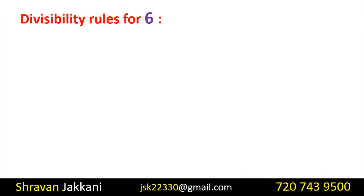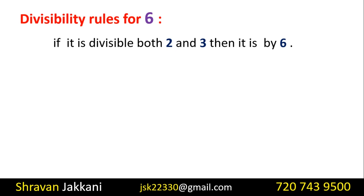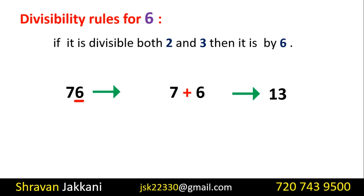Divisibility rule of 6: If a number is divisible by both 2 and 3, then it is divisible by 6. So if a number satisfies both the rule of 2 and the rule of 3, it is divisible by 6. Let's take the number 76: the ones place is 6, which is an even number, satisfying rule of 2. If we add the digits, we get 13. Since 13 is not divisible by 3, 76 is not divisible by 6.